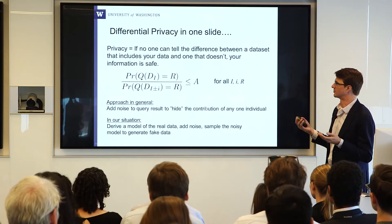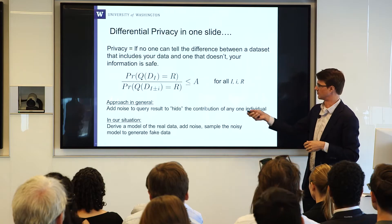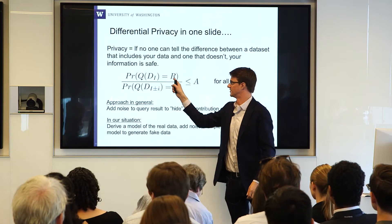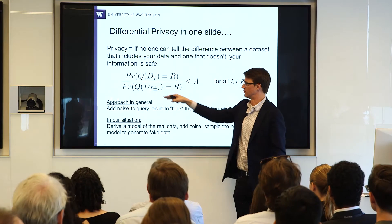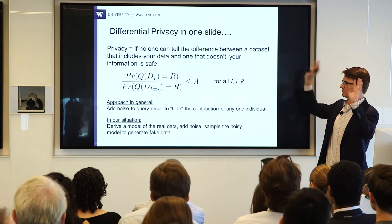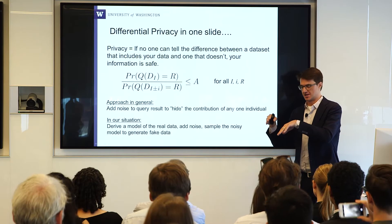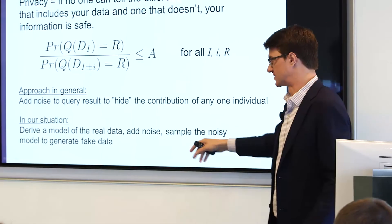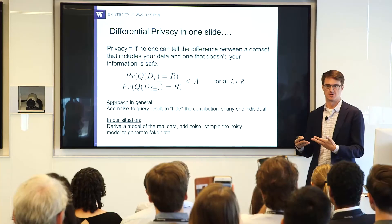Coming to our rescue is the notion of differential privacy. The idea is that there are two possible worlds: the world where your data was included in the data set, and the world where it was not. Differential privacy says you should not be able to distinguish between these two worlds up to some epsilon — it's a pretty conservative guarantee. A query over the data set not including your data gives some result; the same query over the data set that does include your data gives the same result within epsilon. The general approach is to add noise to the query result to hide the contribution of the most extreme individuals. In our world, it's about deriving a statistical model from the real data, adding noise to it in careful ways, and then sampling that noisy distribution to get a fake data set.